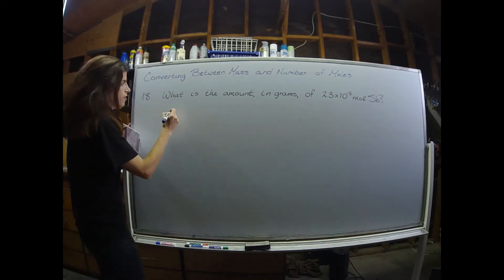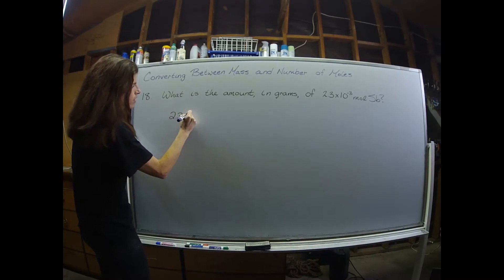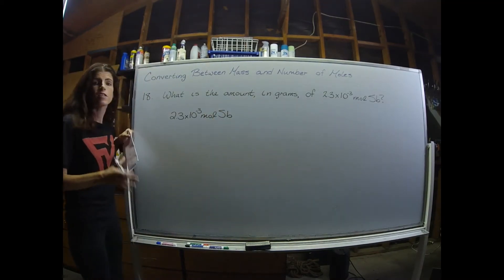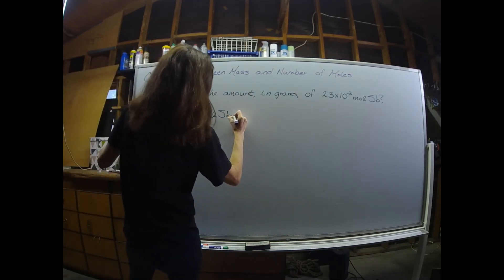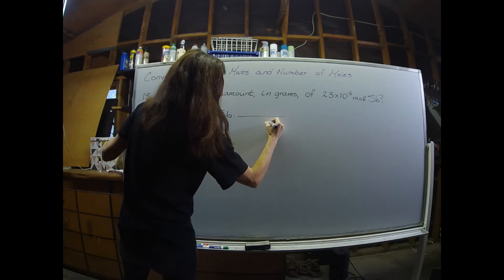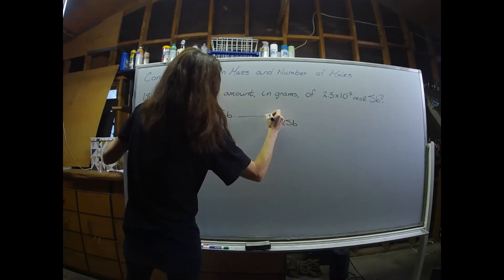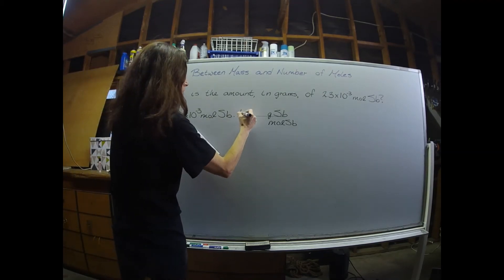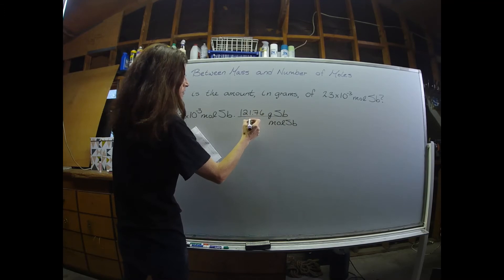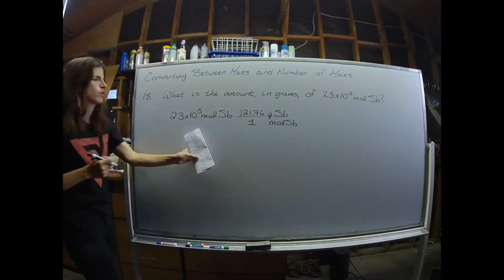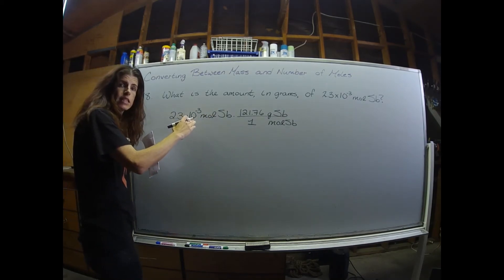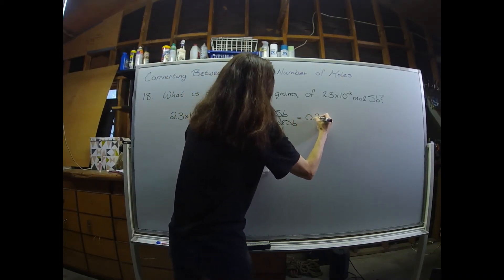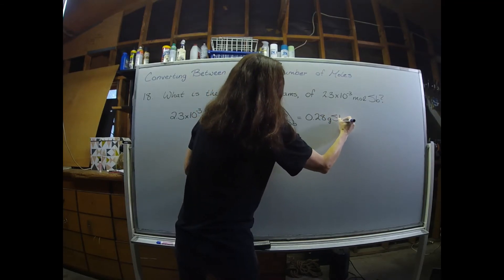We're going to start with the value they gave us — 2.3 × 10⁻³ moles of antimony. We were asked to convert this to grams, so I'm going to set up my conversion factor to get rid of moles of antimony, and in the numerator I'm going to have grams of antimony. From the periodic table, I need 121.76 grams of antimony per one mole of antimony. Multiplying 2.3 × 10⁻³ times 121.76, and with only two sig figs, I report my final answer as 0.28 grams of antimony.